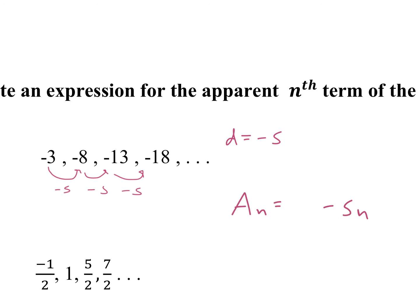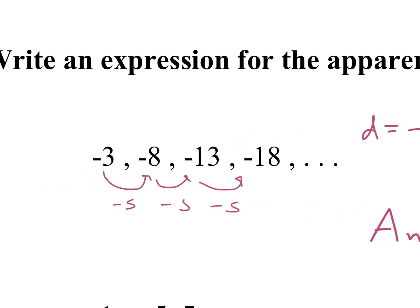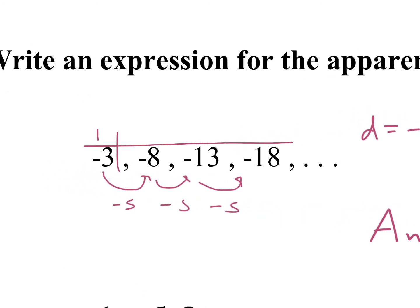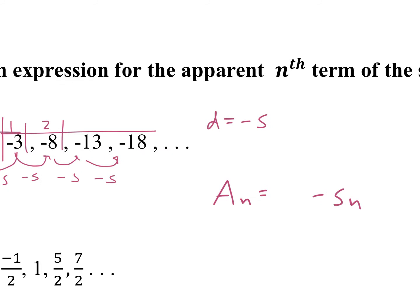We want to find out what our zero term is. Here we have our first term, second. So our zero term — what do we have to do to find that term? Add 5. We do the opposite, so we add 5 to go backwards. So negative 3 plus 5 would be positive 2. So this would be 2 minus 5n.